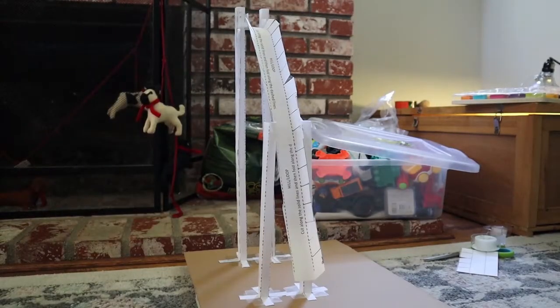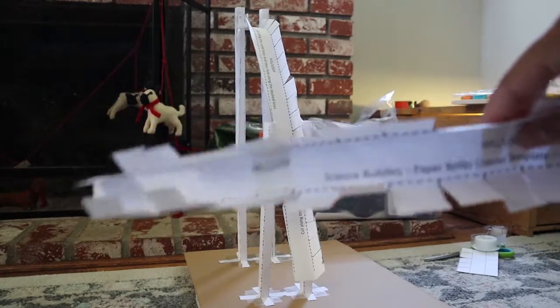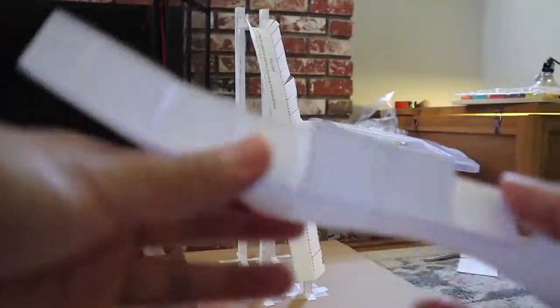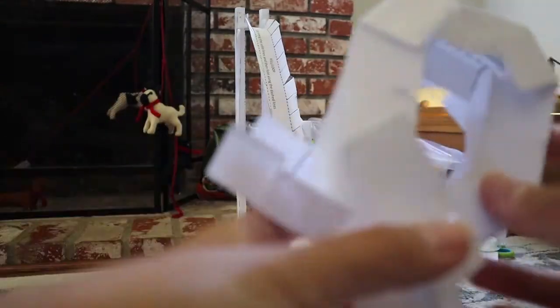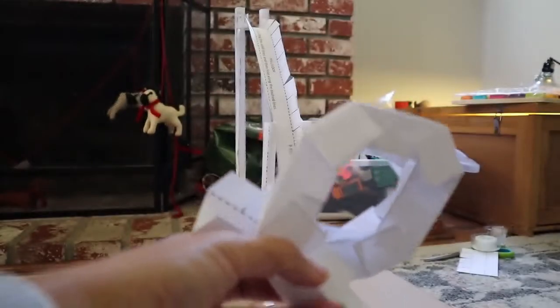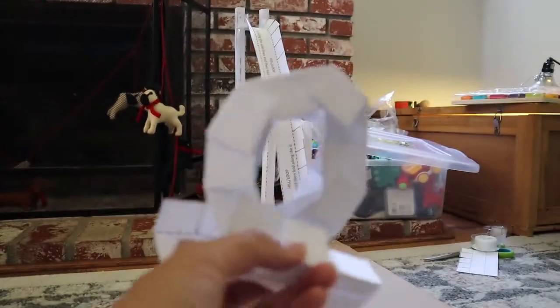All right, so I've combined the two papers and I end up with this giant piece here. When I loop it, it looks like this, which I think gives a better height for a loop. So we'll go attach that now onto the roller coaster itself.